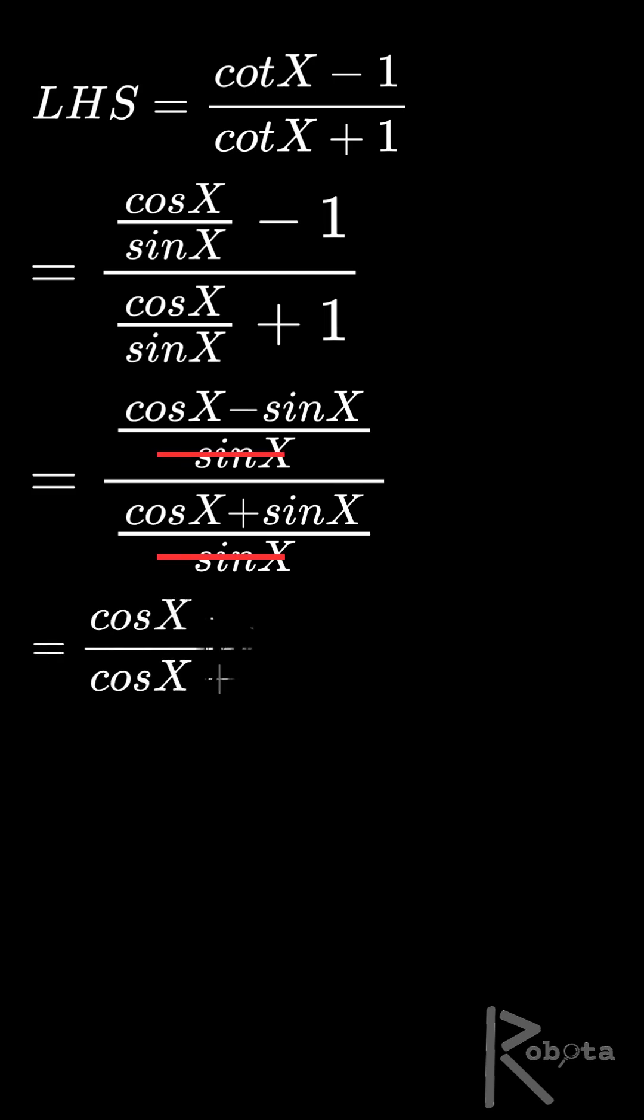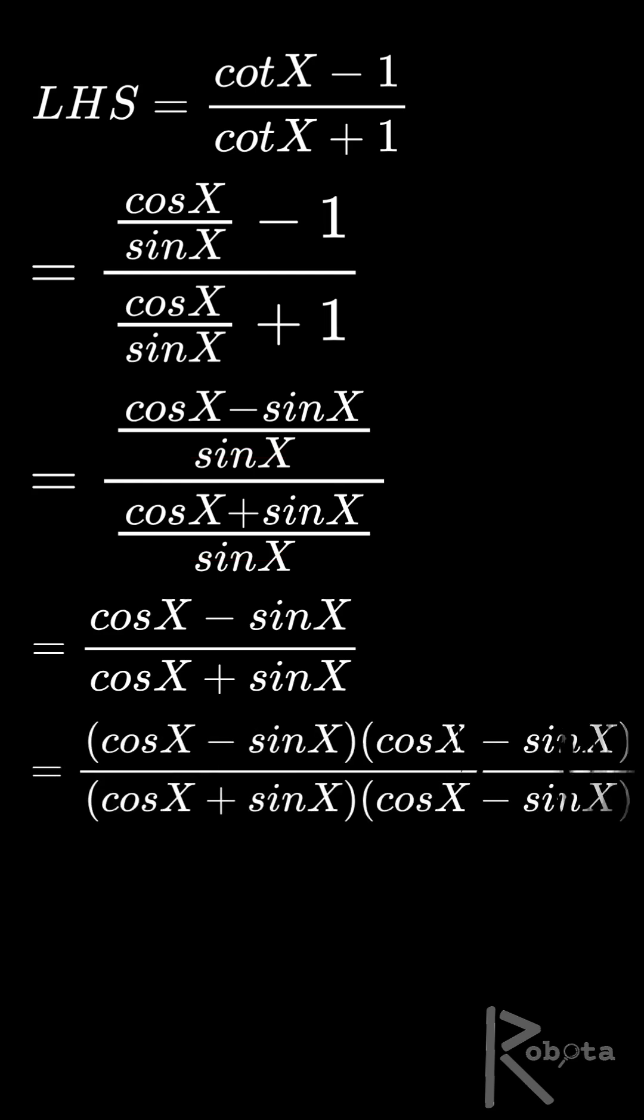That simplifies to cos x minus sine x over cos x plus sine x. Now time to use the conjugate trick. Multiply top and bottom by cos x minus sine x.